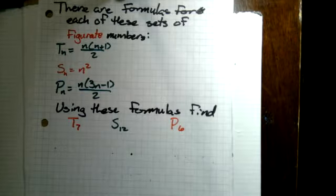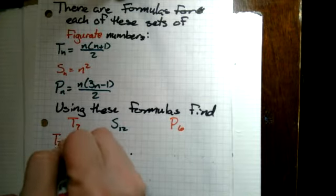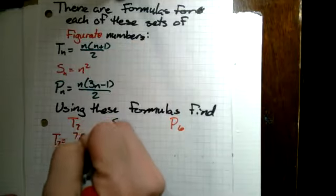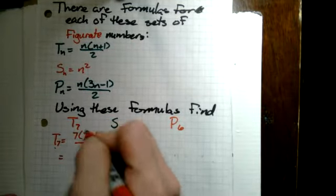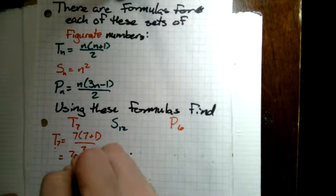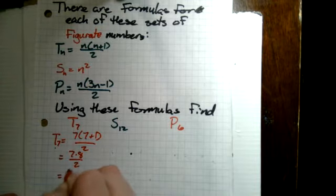So we can do this. T sub 7 is equal to 7 times 7 plus 1 over 2. That's 7 times 8 over 2. 7 times 8 is 56 over 2. That's 28.